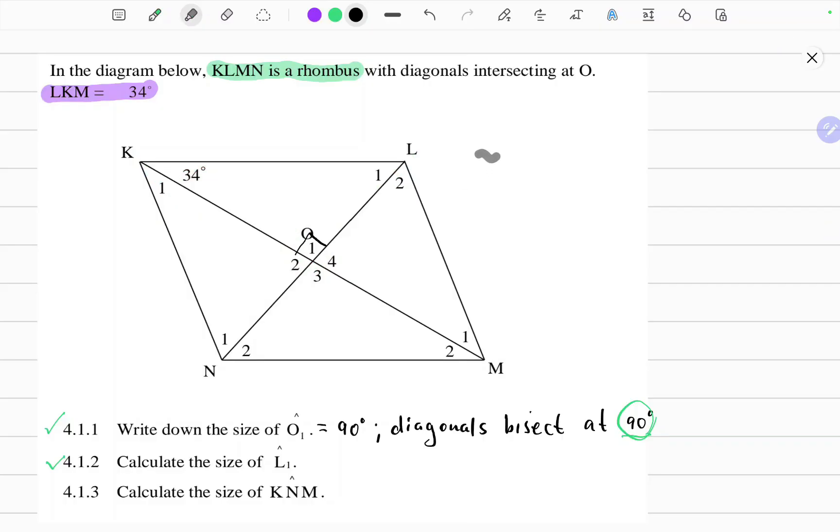So we can say angle LKM plus angle O1 plus angle L1 should equal 180 degrees. The reason is interior angles of a triangle. So now we can substitute angle LKM is 34 degrees plus O1 is 90 degrees, right angle, plus L1, angle L1 equals 180 degrees.